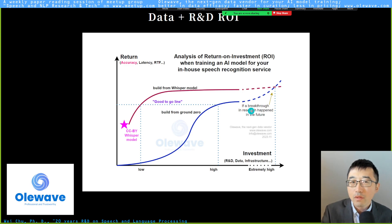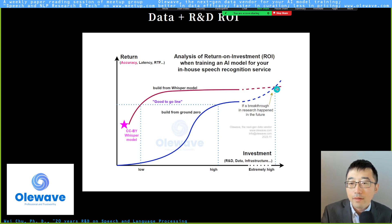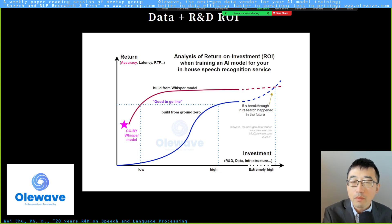Companies like Google and Microsoft consistently invest in speech recognition technology because they want to be the number one speech recognition API provider on the market. They tend to care less about ROI, and with a large research group, they may achieve breakthroughs in the future — but the investment will be extremely high.